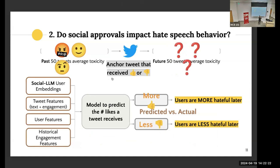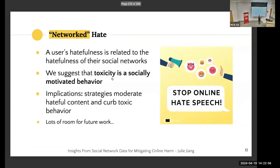To address this, we trained a machine learning model to predict how many likes a tweet will receive based on important features. Then we observed what happens after a person received much more or much fewer likes than predicted — a quasi-experimental approach. We did find that users are much more hateful when they received more social approvals than expected, and much less hateful when they received fewer social approvals than expected.